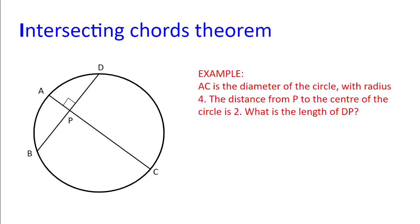An example: AC is the diameter of the circle with radius 4. The distance from P to the center of the circle is 2. What is the length of DP? I'll pause here if you want to try and solve the problem.